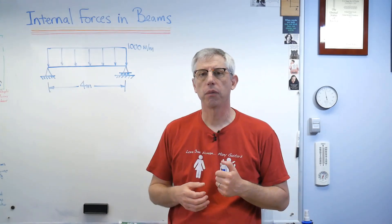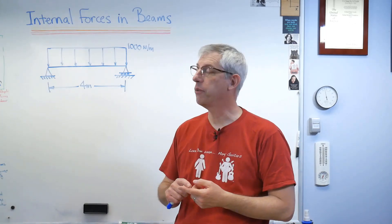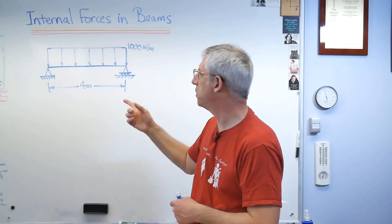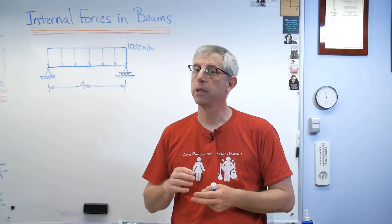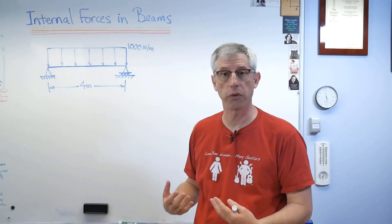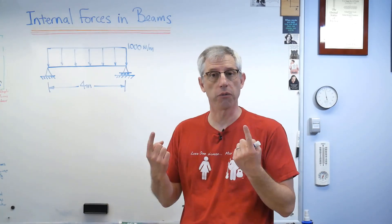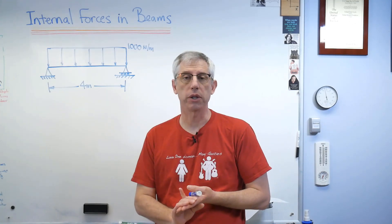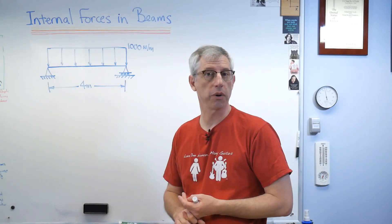Remember the recipe for solving statics problems? It has four mandatory steps and one optional one. Step one: you need a working diagram — in school that's usually the problem statement; in your job it's up to you. Step two: replace it with a free body diagram by cutting the structure free of its supports and replacing those supports with the forces or moments they impose. Step three: write out equations of static equilibrium. Step four: solve for something. The fifth optional step is to enjoy celebratory baked goods.